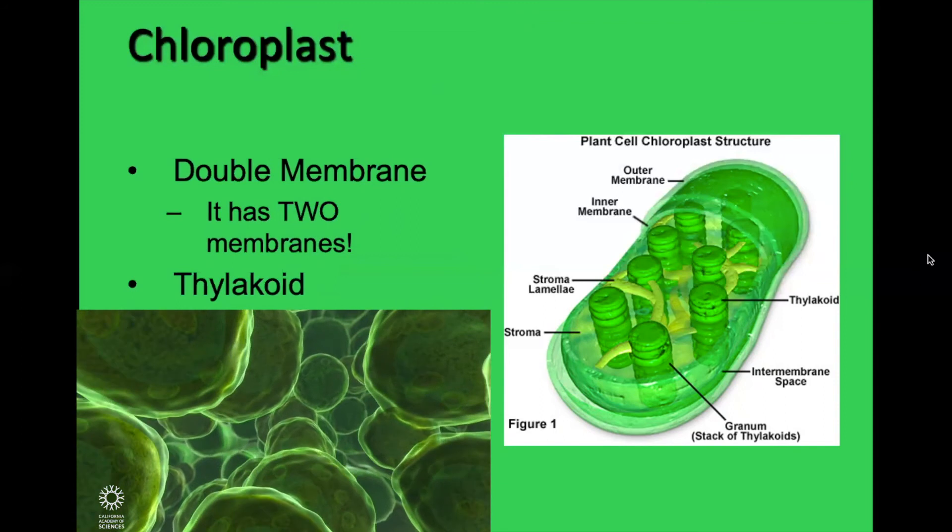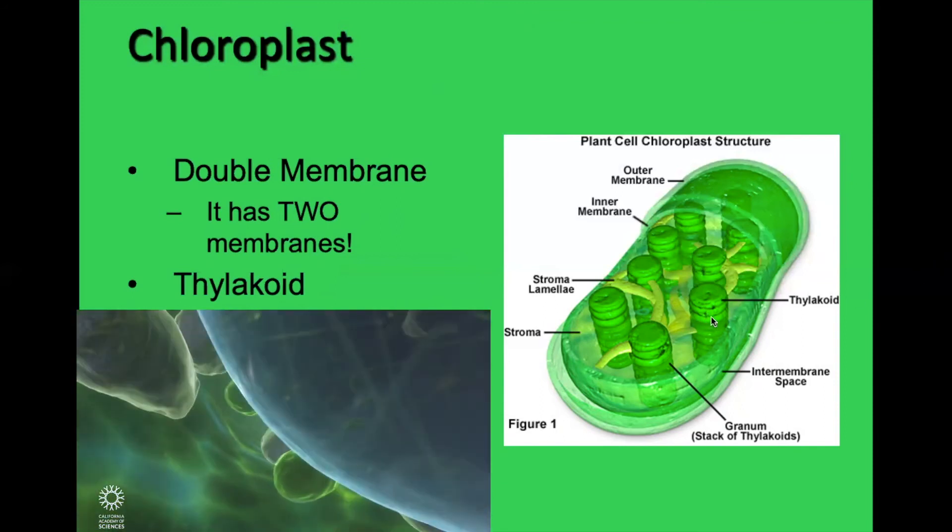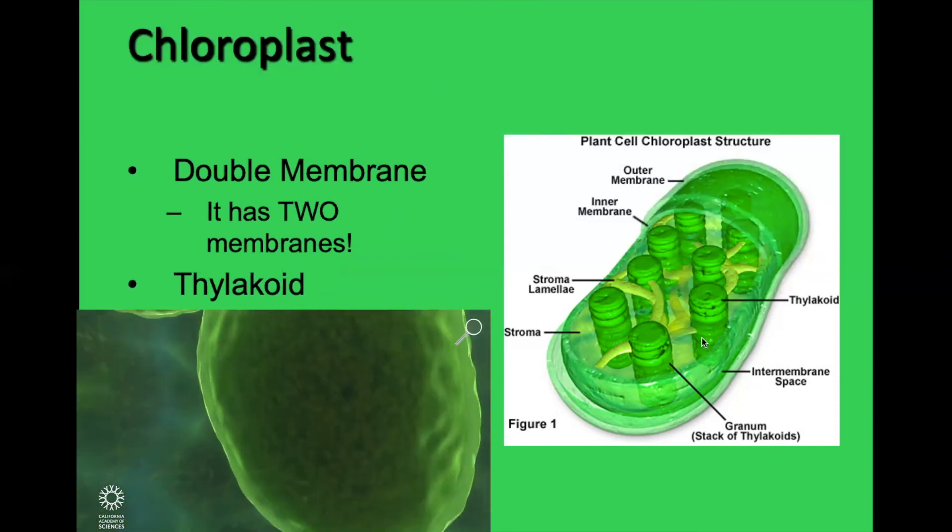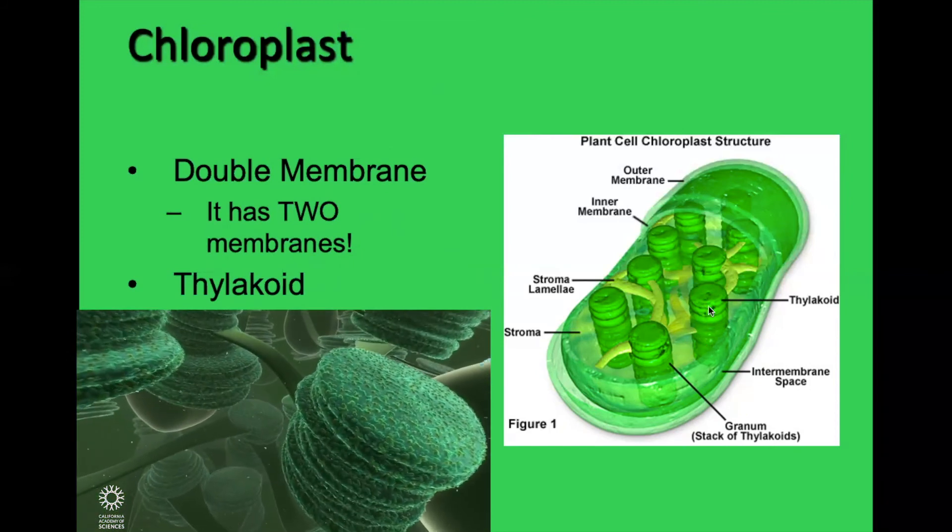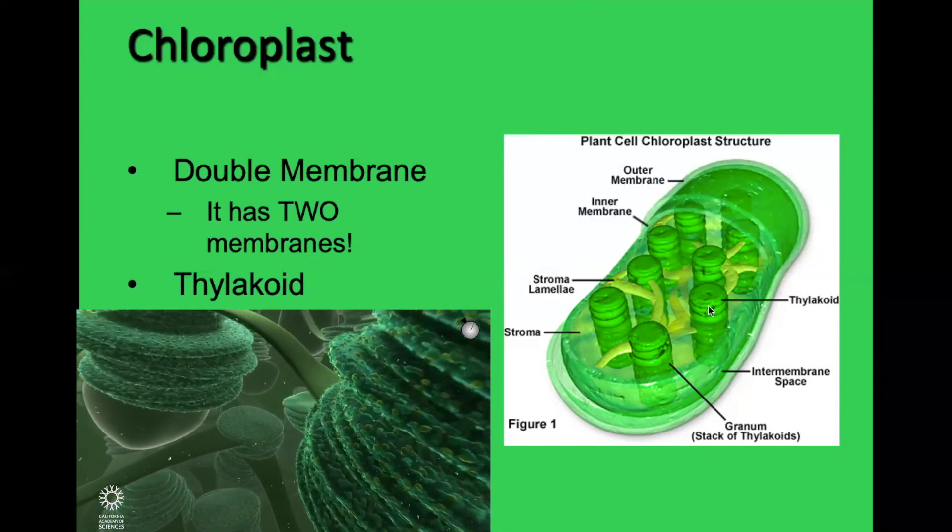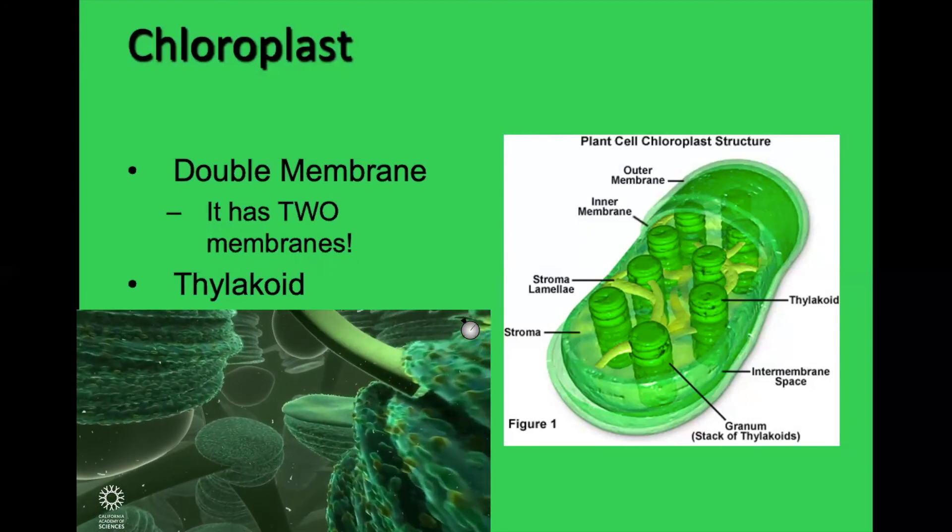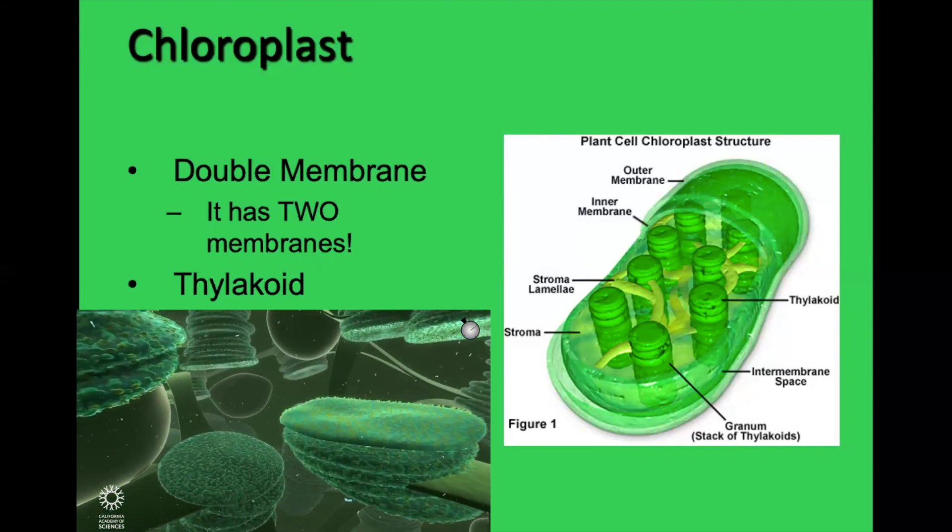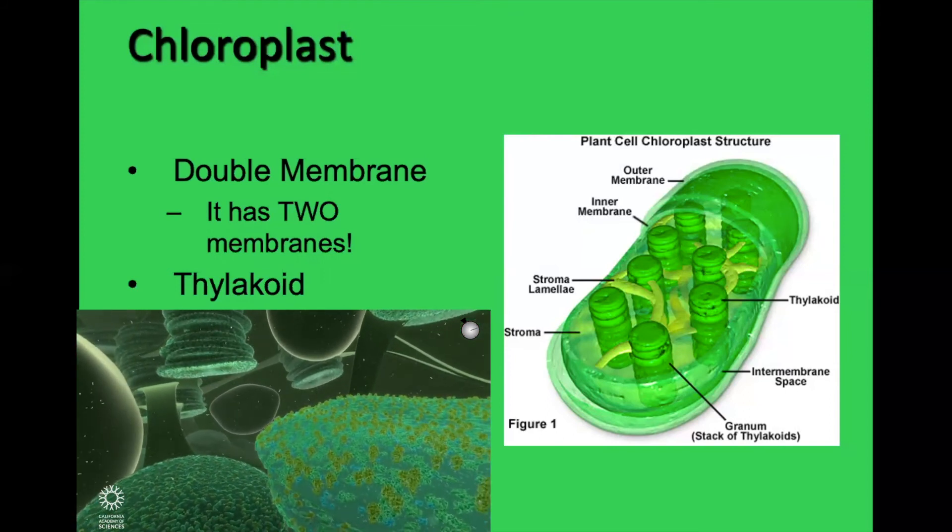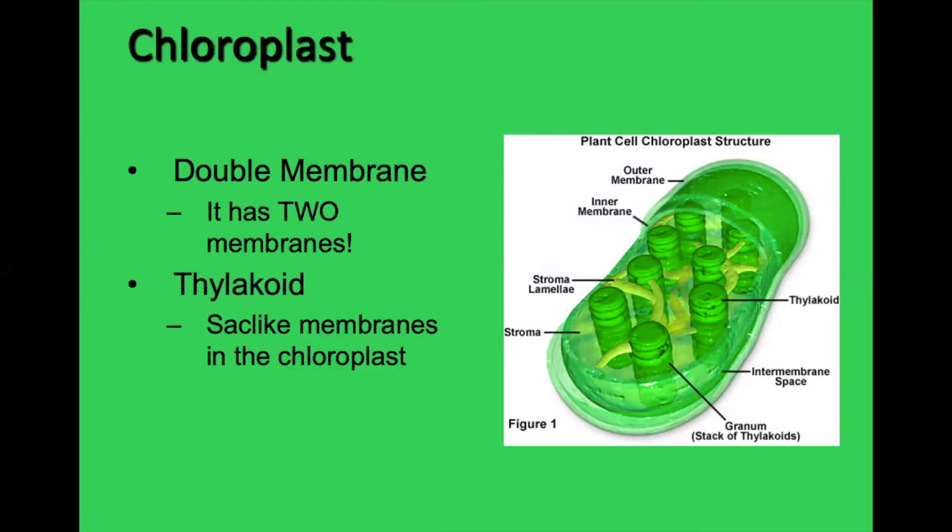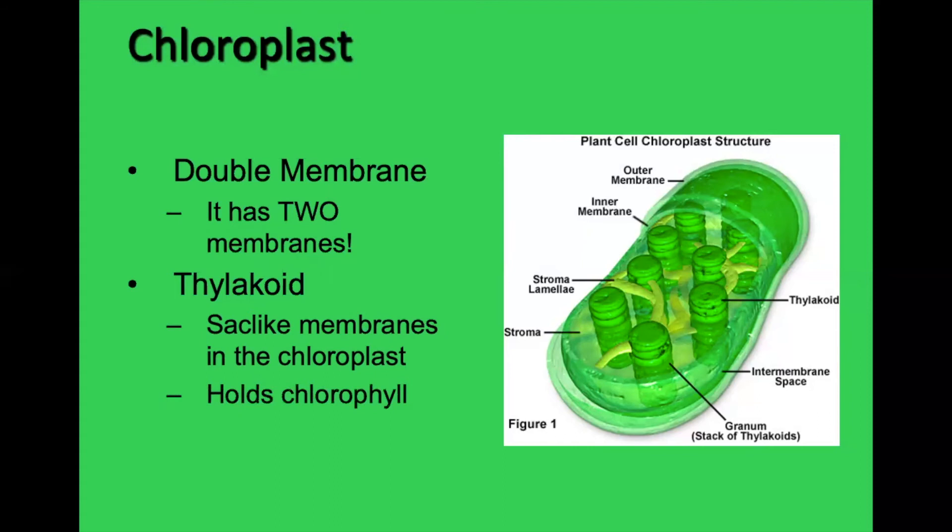Inside, you are going to see, if you look in this picture, it looks like a stack of mentos or a stack of coins. Each little coin is called a thylakoid. And each one, each thylakoid is a sack-like membrane in the chloroplast. Basically, it's a sack of chlorophyll. That's all it is. These are little, each little coin, each little thylakoid is a little chlorophyll balloon.